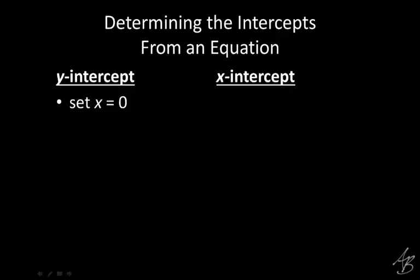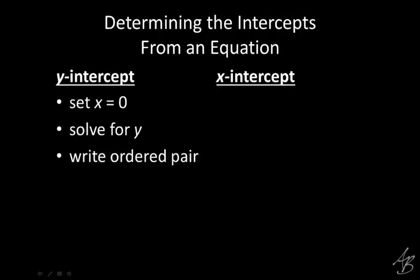We're going to start by writing down X equals zero. This is something you'll want to write down at the bottom of your notes under 'Determining the intercepts from an equation' — underneath Y-intercept, we're going to start by setting X equal to zero. Then what are we going to do with that? We put zero in for X in the equation and then we solve for Y. That gives us an ordered pair: zero comma whatever the Y-coordinate is.